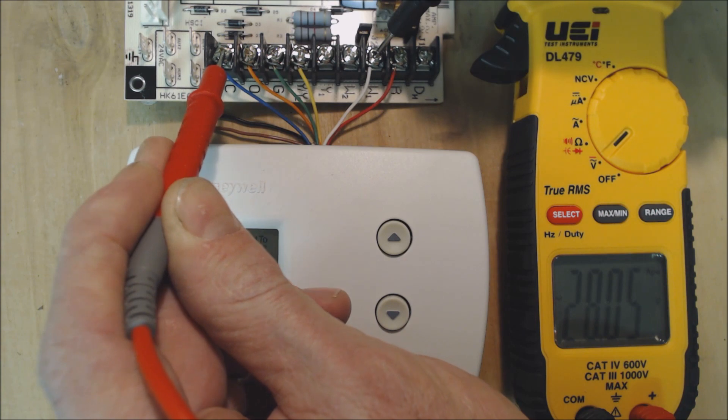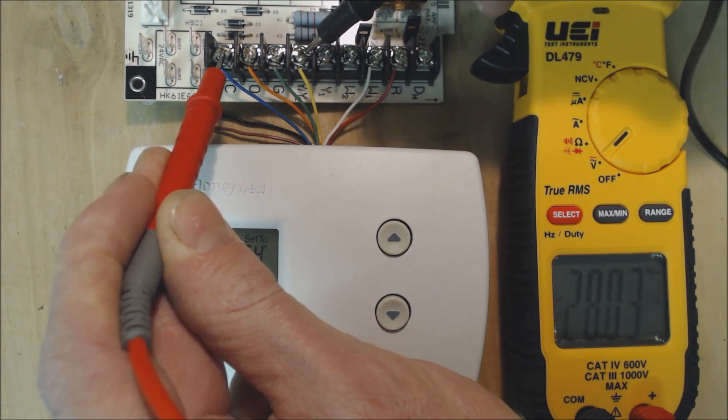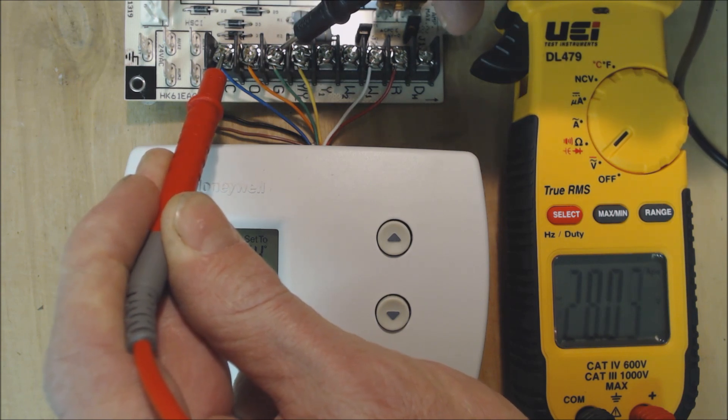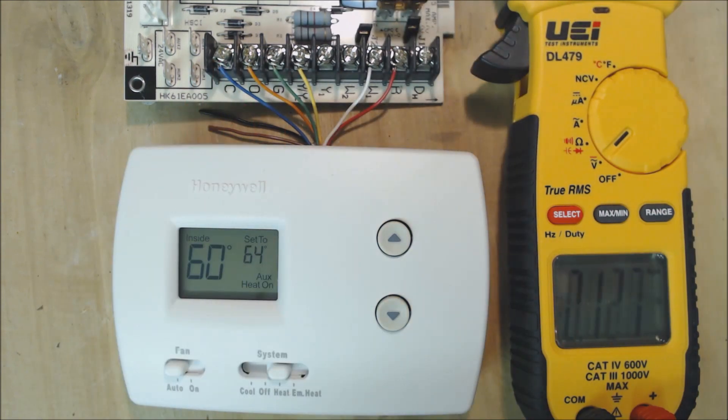We're going to read that now. 28 volts for W, and we still have our 28 volts on Y, we still have 28 volts on G, and we do not have any voltage on O, which is correct. In this case, that auxiliary heat could be electric resistance, it could be a hot water coil, something along those lines.